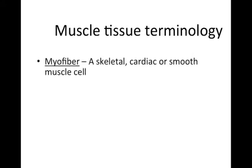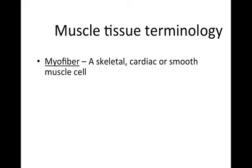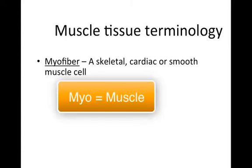Here is some muscle terminology you should become familiar with — you may want a sheet of paper ready as these terms appear on your ICAN sheet. First, the term myofiber refers to a skeletal, cardiac, or smooth muscle cell. The terms myofiber, muscle cell, and muscle fiber will be used interchangeably. The prefix myo is Latin for muscle, so whenever you see myo in anatomy, biology, or medicine, it refers to muscle tissue.